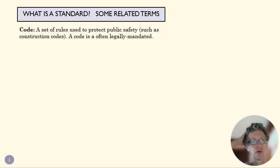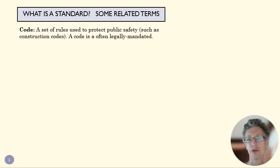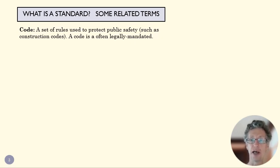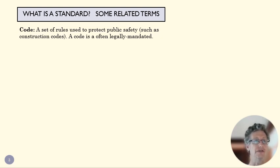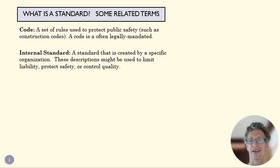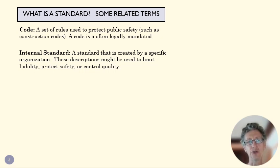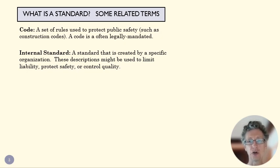A code is a set of rules designed to protect public safety. The most common ones are construction codes — when you do some remodeling of your home, you need to make sure you're following code, following a set of standard ways of building to make sure the house remains safe. An internal standard is a standard that operates within an organization or corporation, used to describe how they do things within that particular organization — for liability reasons, quality control, or all sorts of reasons. That's a voluntary standard that the organization decides to do on its own.